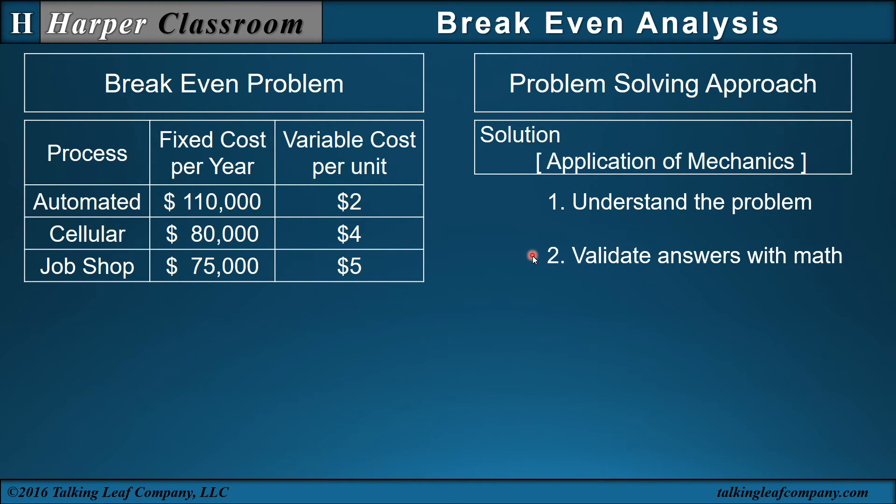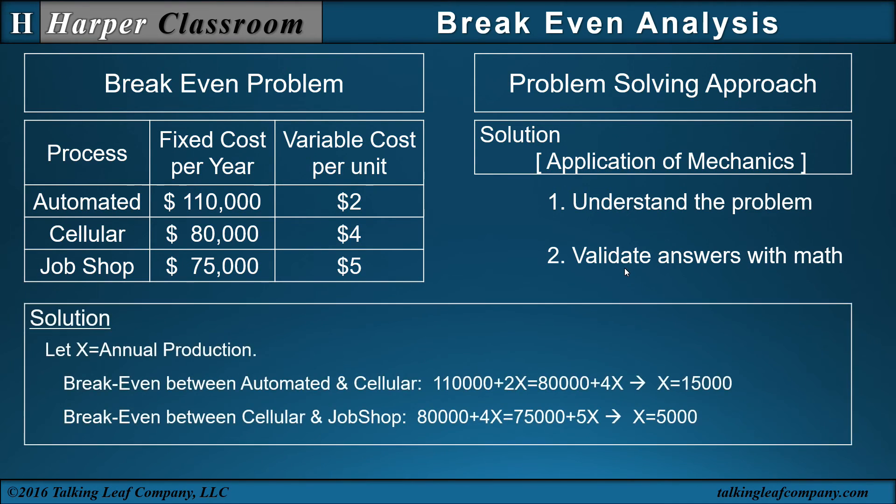The second, notice I don't say find the answers. I say validate your answers. Because we already know pretty much where the answers are: $5,000 and $15,000. Let's use math to validate those answers. The mathematics is let X be the annual production. The break even between automated and cellular. You bring your fixed cost down. You bring your variable cost down. Solve for X and there's your $15,000. That's what we expected. Between cellular and job shop. Bring your fixed cost down. Bring your variable cost down times X, your production. Solve for X, there's your $5,000. And notice the mathematics was used to validate our understanding of the problem.